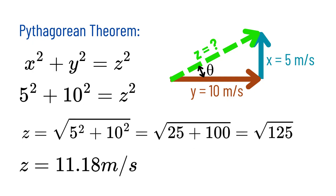We use the Pythagorean theorem to find the resultant: x² + y² = z². Substituting x = 5 and y = 10, we get 5² + 10² = z². Solving, we get z = 11.18 meters per second. That means the swimmer's actual speed relative to the ground is 11.18 meters per second.